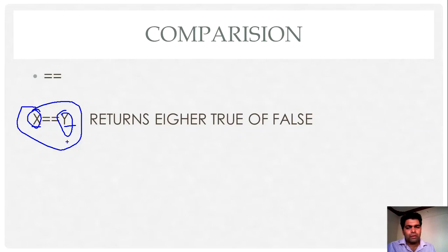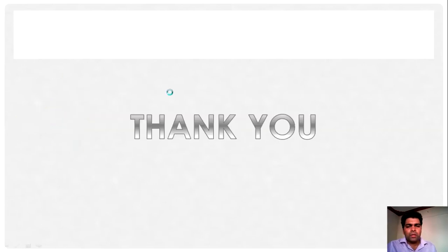If it is exactly equal to Y, then it will show true, otherwise it will return false. So comparison operator is used for comparison. These are the operators that are available in VB.NET.